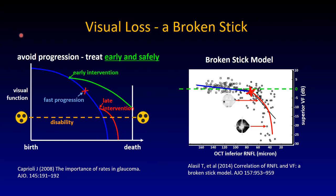Is that really a good idea? That depends on when you're going to throw out the sink. Here is the broken-stick problem: to avoid progression, glaucoma needs to be treated early and safely. The blue line designates visual function loss during a patient's life. An early intervention would be desirable to prevent severe visual disability. If you wait until there is already significant vision loss, you are on a steeper downward trajectory.